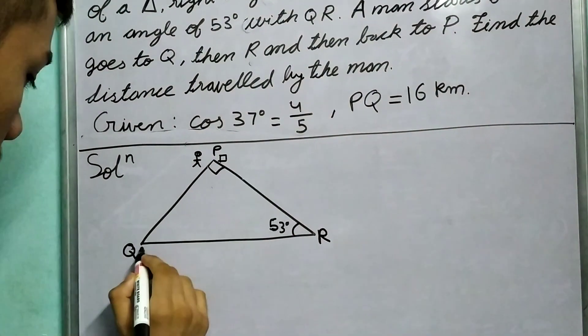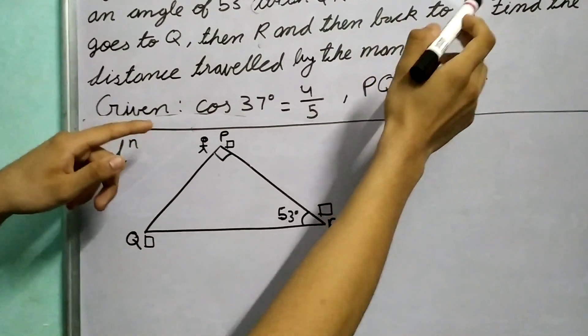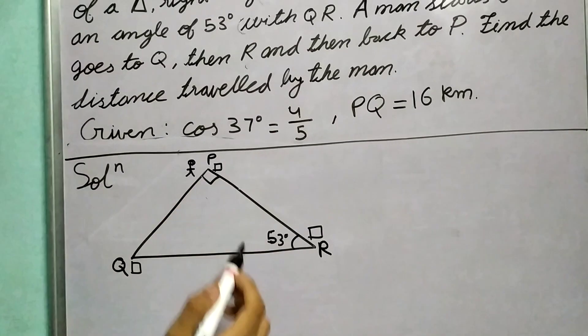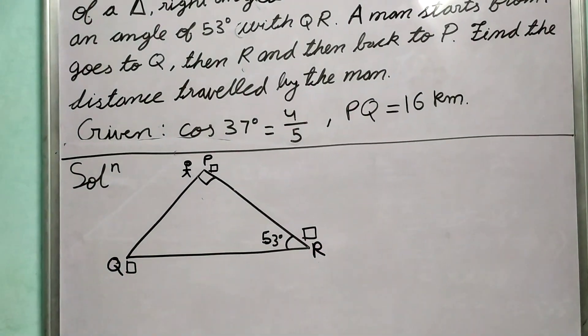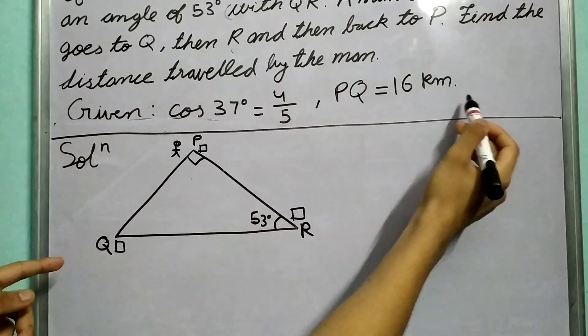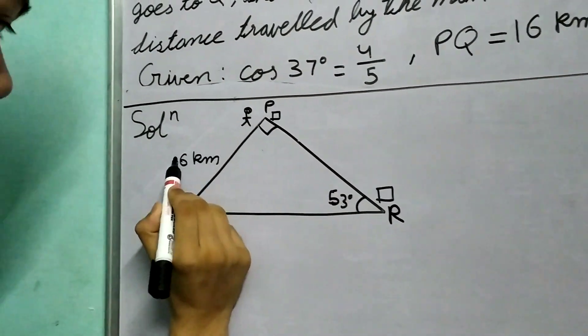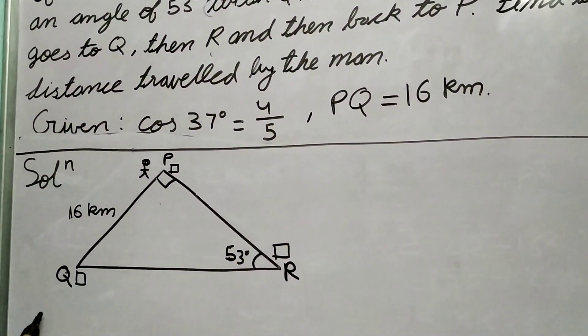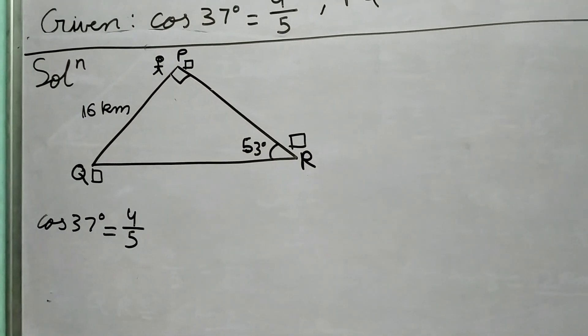A man starts from P, and these are three houses. The man goes from P to Q, Q to R, and then back to P, so he's essentially covering the perimeter of this triangle. We're given that PQ is 16 km, so this length PQ is 16 km, and cos 37° is 4/5.